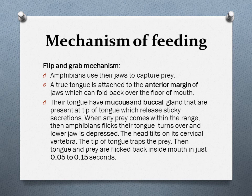The amphibian holds the prey by pressing it against teeth on the roof of the mouth. The tongue and other muscles of the mouth push food towards the esophagus. The eyes sink downward during swallowing, also helping to push the food towards the esophagus.